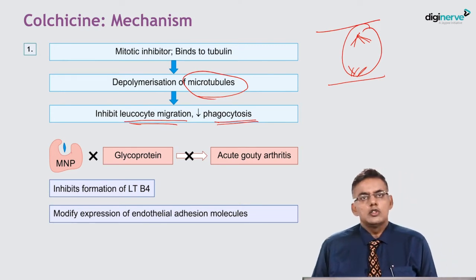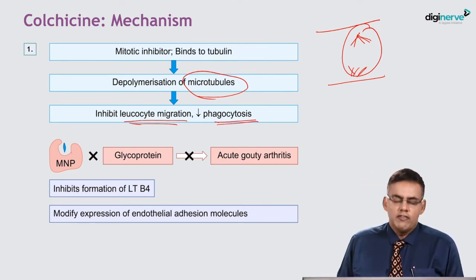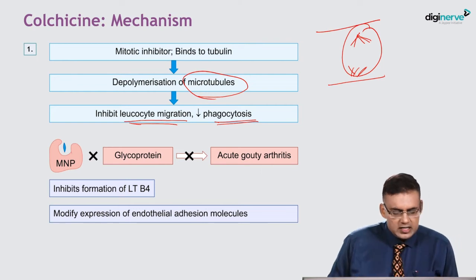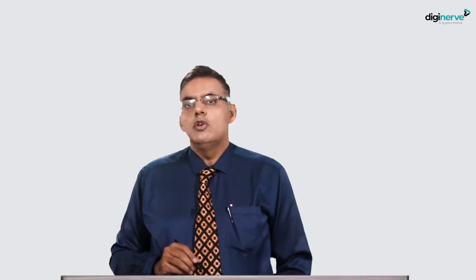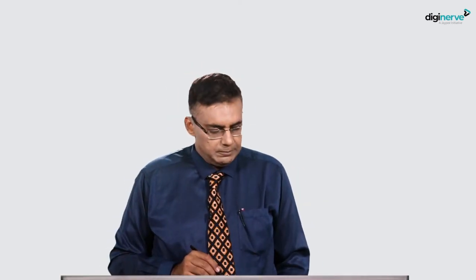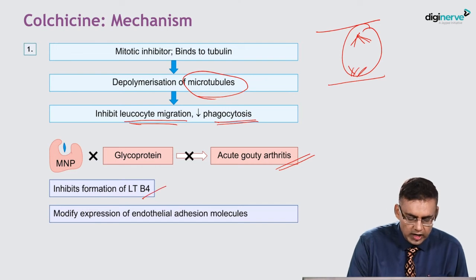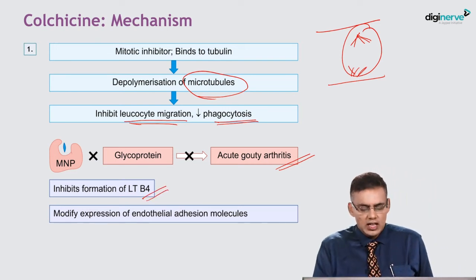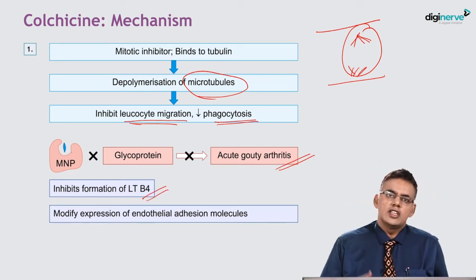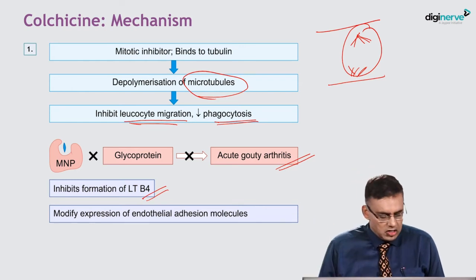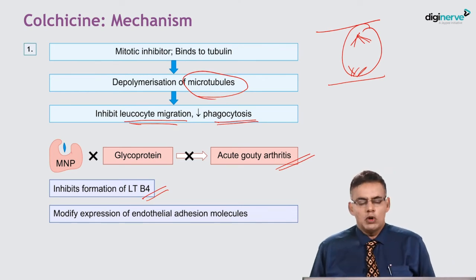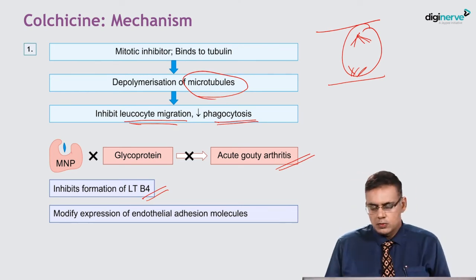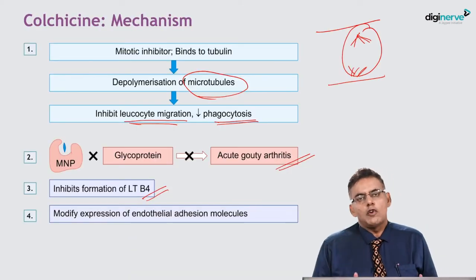In addition, colchicine acts on mononuclear phagocytes and inhibits the release of glycoprotein, which further causes inhibition of acute gouty arthritis. A third mechanism is inhibition of leukotriene B4 formation, which further stimulates inflammation. It also modifies the expression of endothelial adhesion molecules. These four mechanisms are responsible for the anti-inflammatory effect of colchicine.